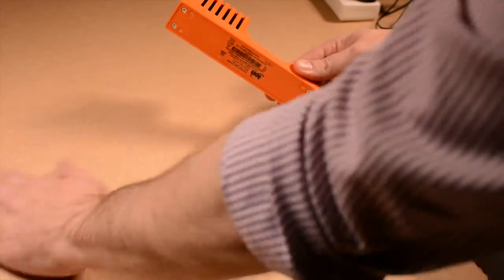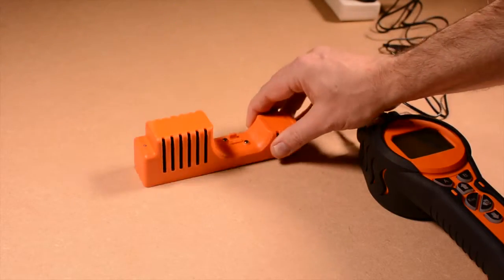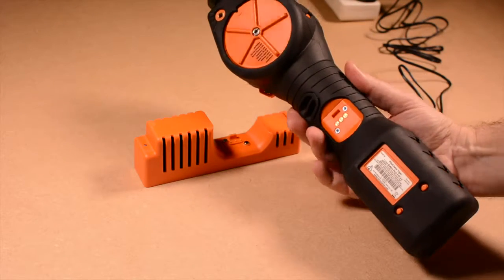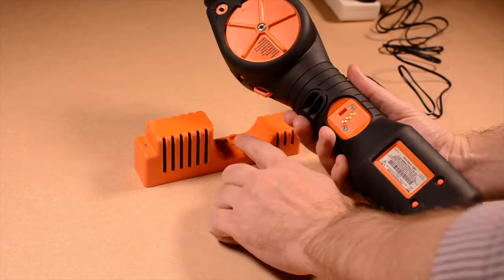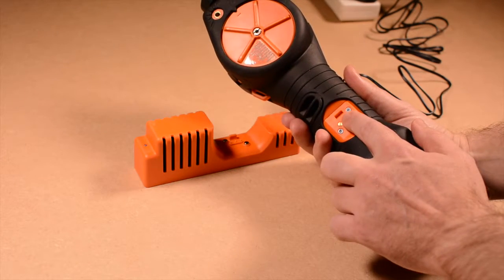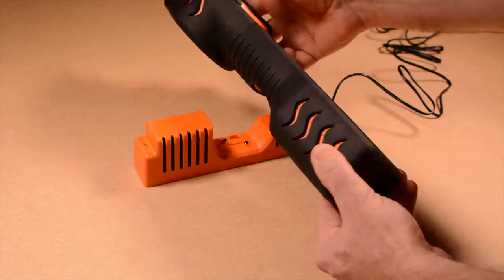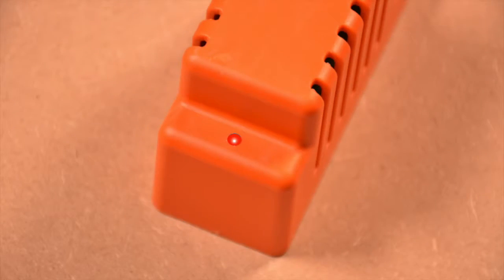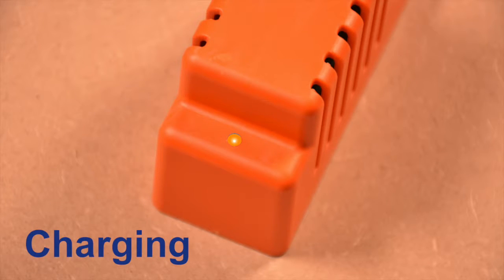Place the charge cradle on a flat surface with the LED to the left of the instrument. Align the location post on the charge cradle with the recess in the back of the instrument. The Tiger instrument should just drop into place. The LED on the charge cradle will change to amber. The instrument is now charging.